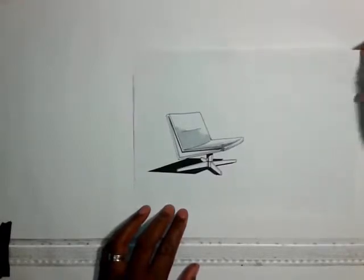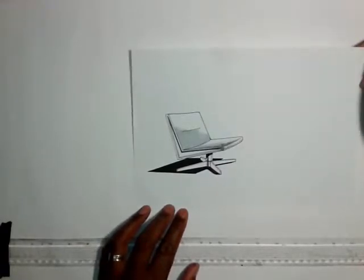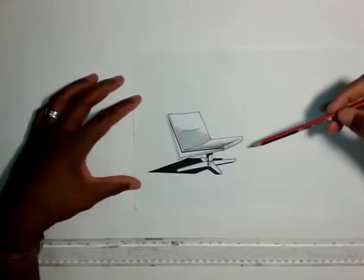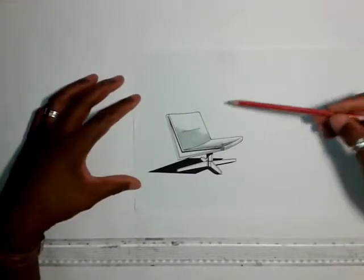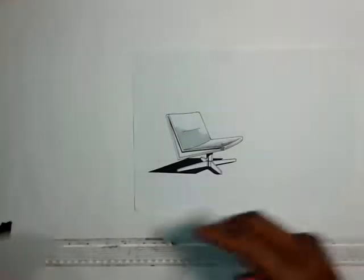Now when you're drawing an object or anything in particular in perspective, it's always a good idea to try and figure out what sort of shape it takes. This chair, for example, would sit quite nicely in a cube.